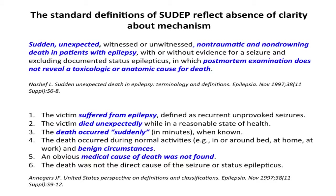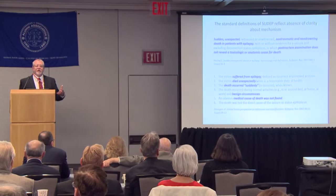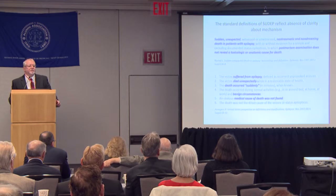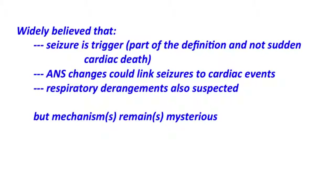A sudden death in epilepsy case is defined by a sudden and unexpected death that's not traumatic, not drowning. If you had a seizure and crashed your car, that's not sudden death in epilepsy. A critical weakness of the entire exploration of sudden death is that the diagnoses are labeled such only when there's nothing on a post-mortem examination to point to the cause of death. When there is, the death gets labeled by that cause and pulled out of the sudden death category.